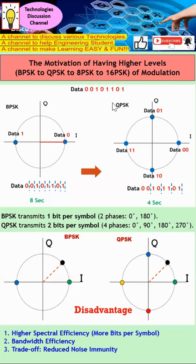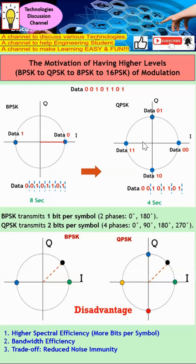Now let's move to QPSK. For QPSK, when the data is 00, I have a phase shift of zero. When the data is 01, I have a phase shift of 90 degrees. When the data is 10, I have a phase shift of 270 degrees (or minus 90 degrees). And when the data is 11, I have a phase shift of 180 degrees.